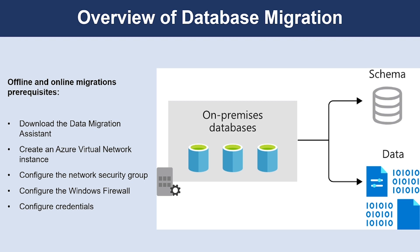For both offline and online migration, you have the same prerequisite tasks. The prerequisites include downloading the Data Migration Assistant, creating an Azure Virtual Network instance, configuring the network security group, configuring the Windows Firewall, and configuring the credentials. Finally, you need to provision your target database in Azure as well.